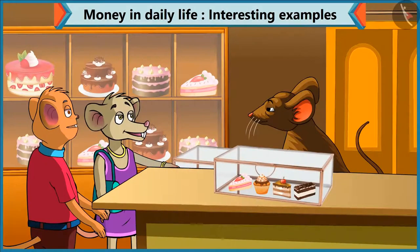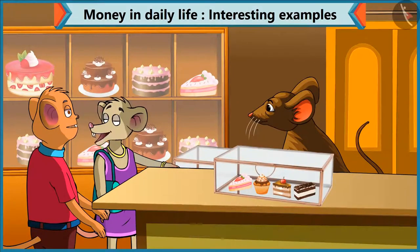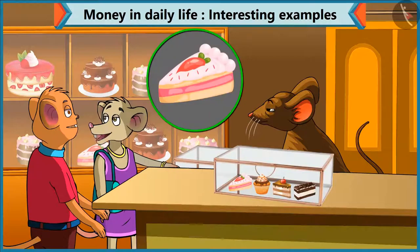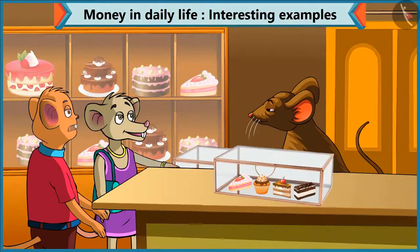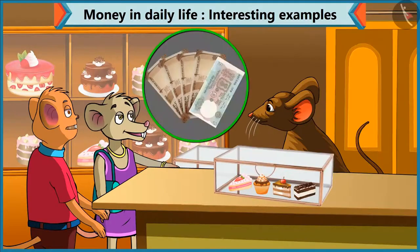Chichi, what pastry do you want to buy? I want to have this pastry. Brother, what is the cost of this pastry? This pastry is 45 rupees. Chichi, for 45 rupees, give 4 notes of 10 and 1 note of 5.